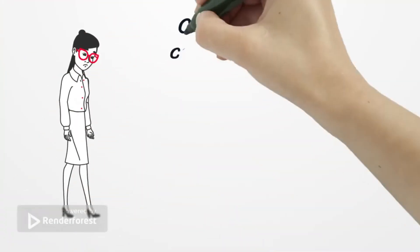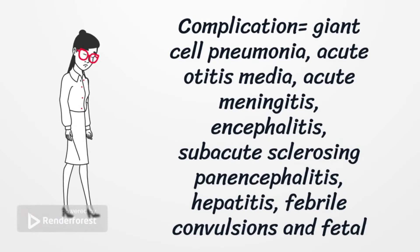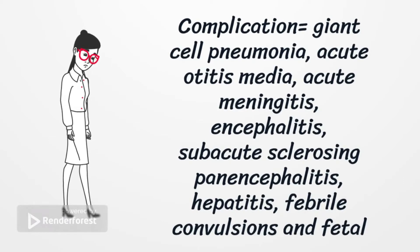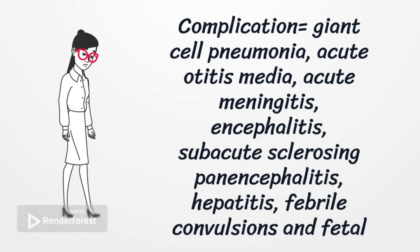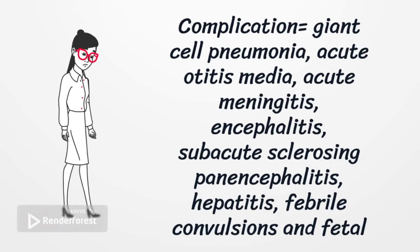Complications include giant cell pneumonia, which is the commonest cause of death, acute otitis media, acute meningitis or encephalitis during or immediately post-infection, or sub-acute sclerosing panencephalitis, which usually occurs six to eight years later with progressive decline to death over one to three years. The child may also develop hepatitis as well as febrile convulsions. In pregnant women, there may be fetal malformations if infection occurs in utero.